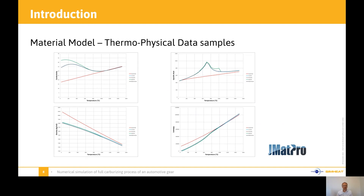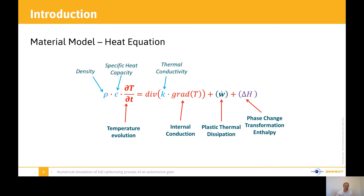Here are some typical thermal physical data. We use GMAT Pro for those — that information can be hard to find. There's Thermal-Calc that could be useful as well for the thermal physical data. Unfortunately, Thermal-Calc cannot provide information about the mechanical stress behavior of the material, so that's what is lacking and what we need for our simulations. Here we have some information about the temperature dependence of density, heat capacity, thermal conductivity and so on. This is the traditional heat equation we use — I just want to show the full model and there are no shortcuts in our products.